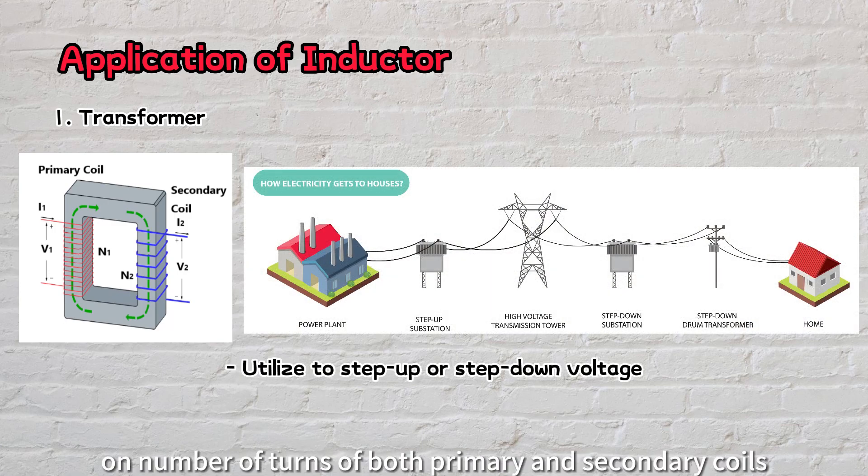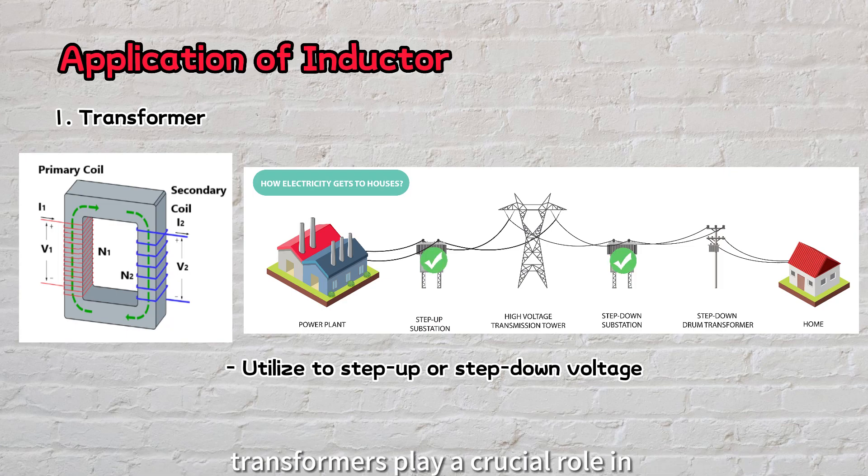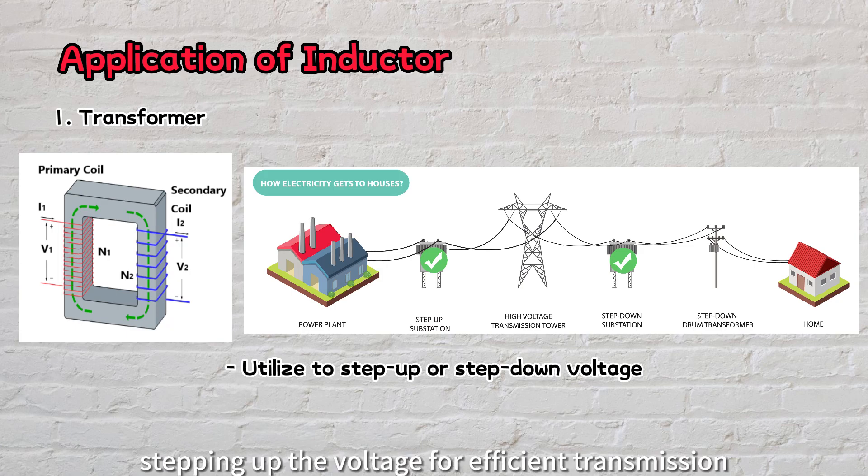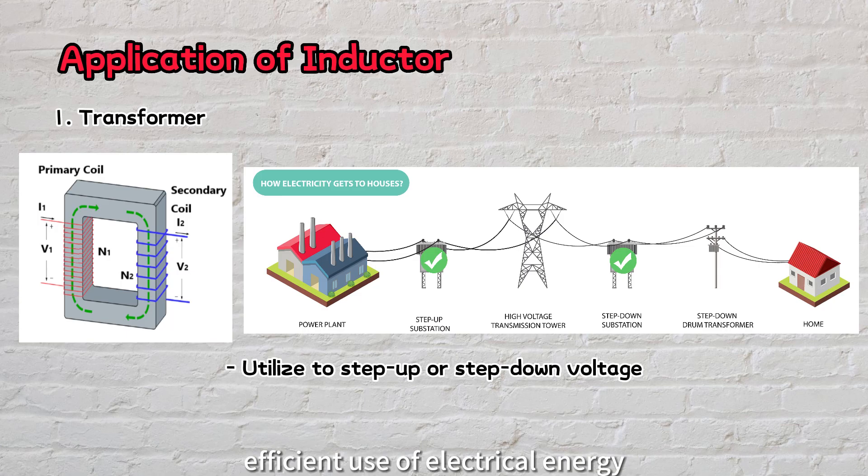With appropriate design on the number of turns of both primary and secondary coils, transformers play a crucial role in power distribution systems, stepping up the voltage for efficient transmission, and stepping down the voltage for efficient use of electrical energy.